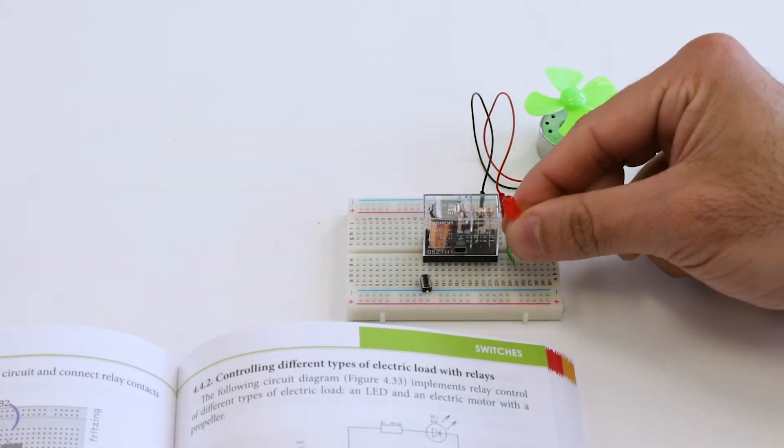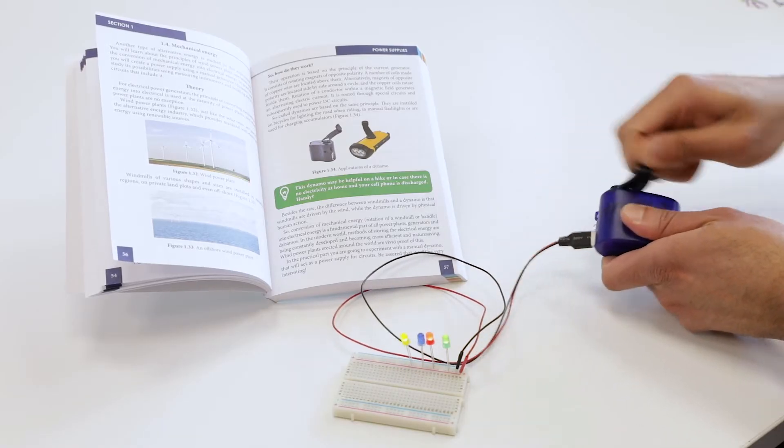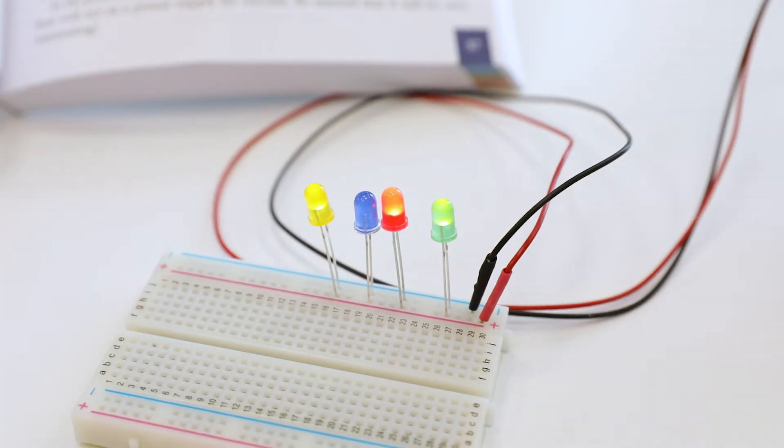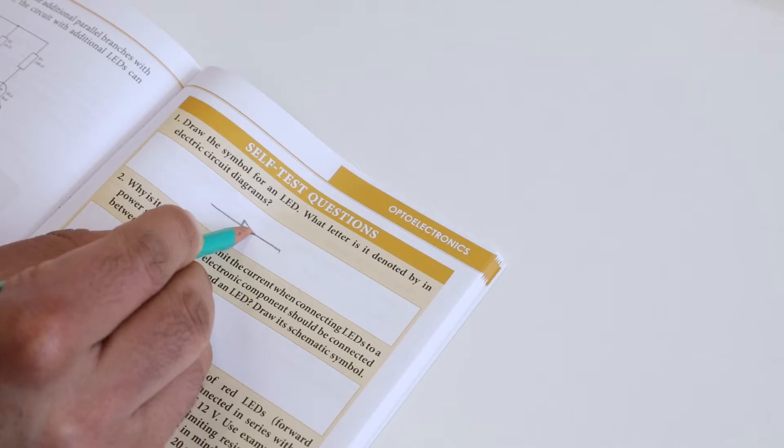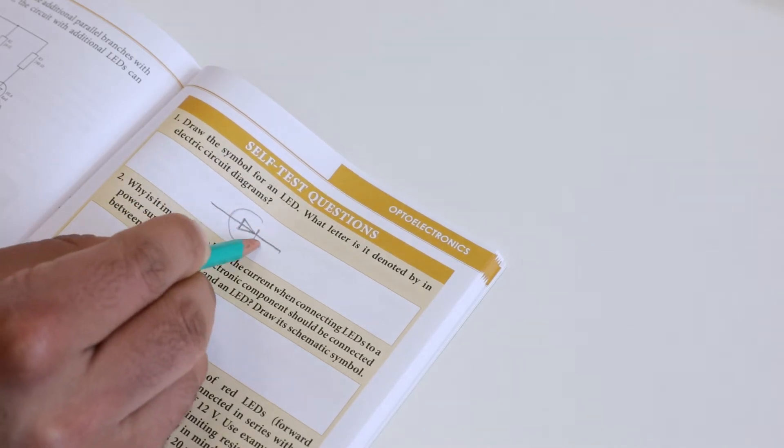The course takes you step by step to build your first electronic circuit using various power sources. You will learn how to take measurements and how to read and draw circuit diagrams. You'll have a chance to test your knowledge with a self-test quiz at the end of each section.